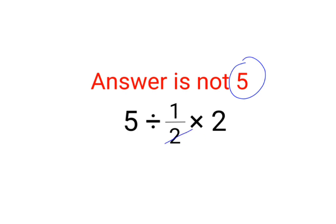So here what people think is this is so easy, right? 2 and 2 gets cancelled, you are left with 5 divided by 1. The answer is 5.